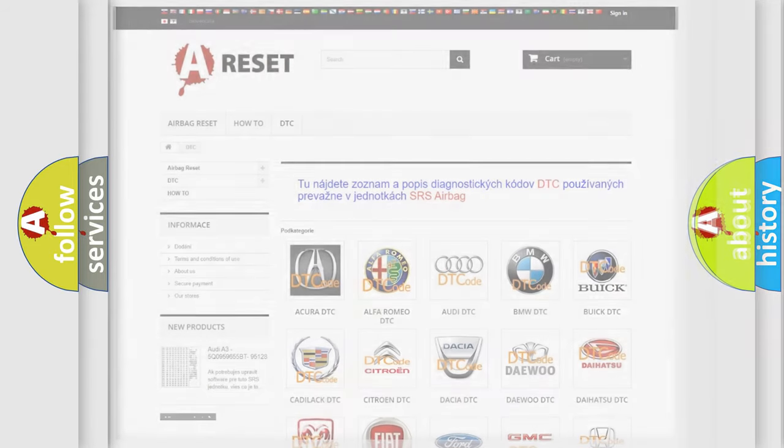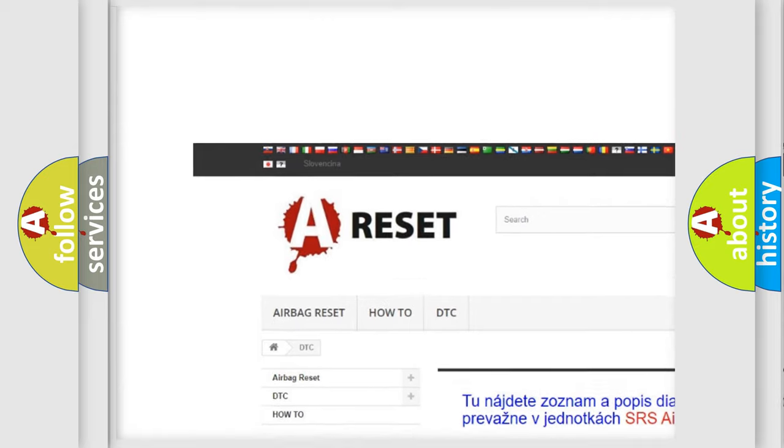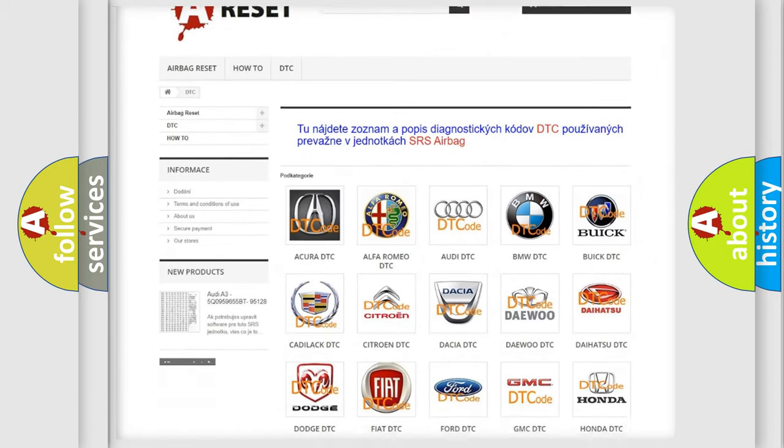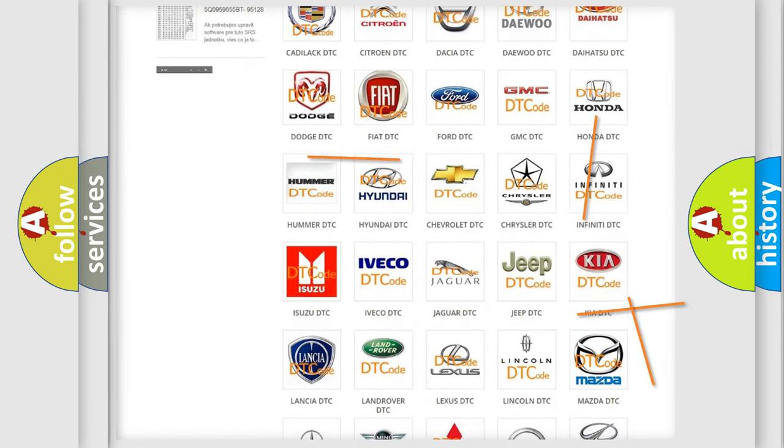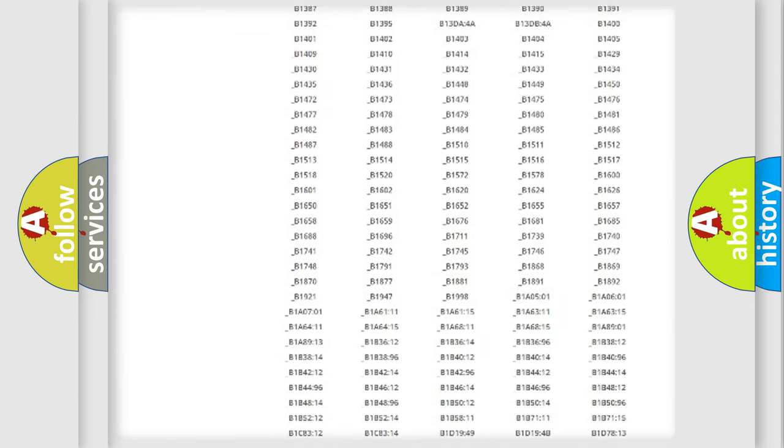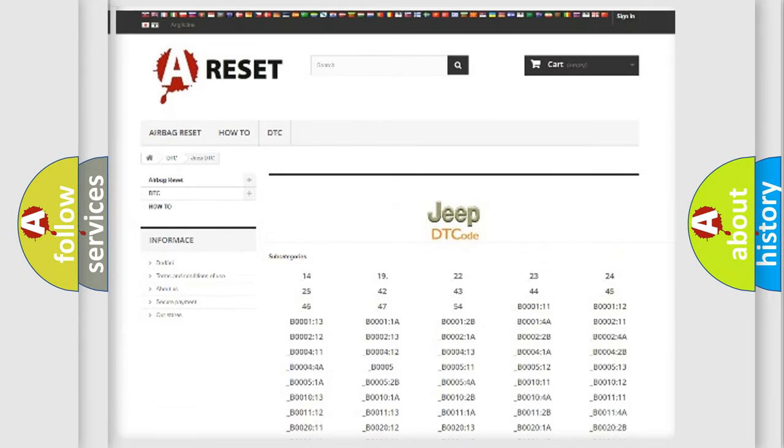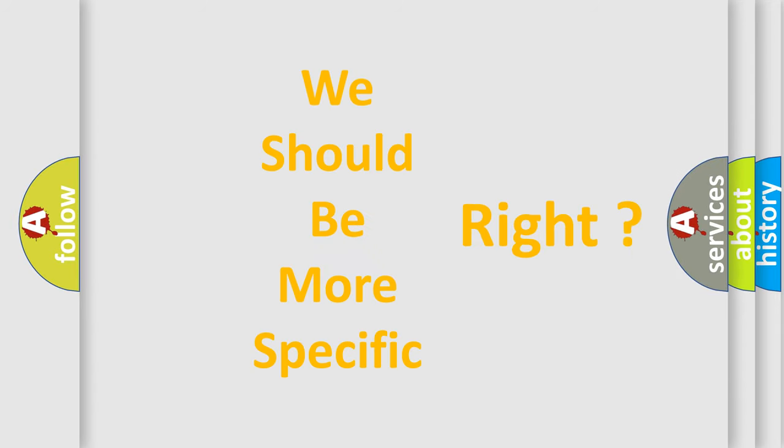Our website airbagreset.sk produces useful videos for you. You do not have to go through the OBD2 protocol anymore to know how to troubleshoot any car breakdown. You will find all the diagnostic codes that can be diagnosed in Jeep vehicles, and also many other useful things. The following demonstration will help you look into the world of software for car control units.